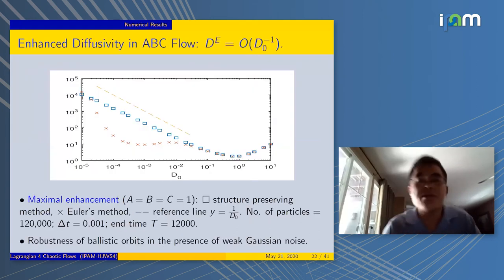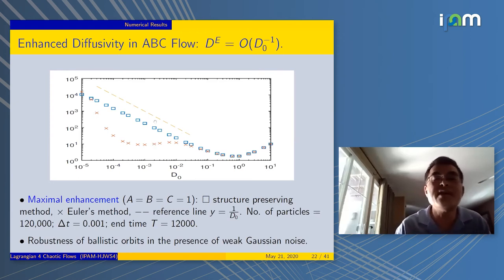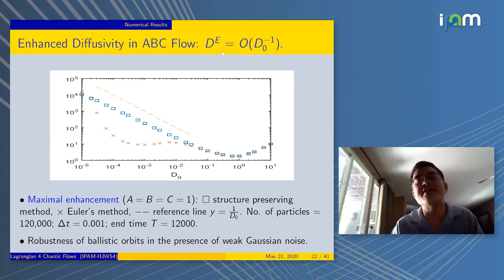Let's see how it works. First we apply to the ABC flow, with capital T equals 12,000, delta T is 10^-3, and number of particles 120,000. Then we can go down to D_0 equals 10^-4. From 10^-3 to 10^-4, we can fit a line and get the slope. The effective diffusivity is on the order 1 over D_0. This is the maximum enhancement.